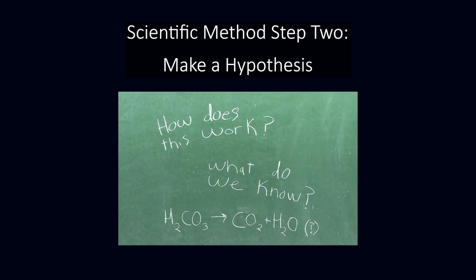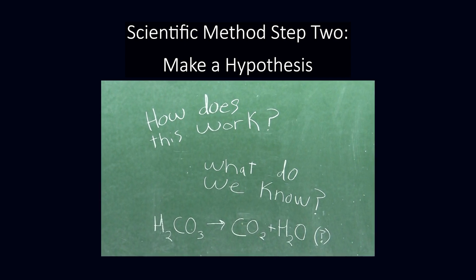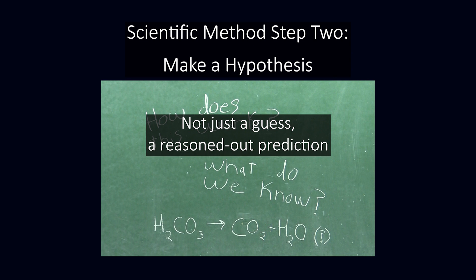Step two is to make a hypothesis, or a postulate if you will, that explains how your phenomenon works. A real hypothesis is not simply a guess. It's a prediction based on what's already known about your phenomenon. So, in order to make one, you have to learn as much as you can about whatever it is you're studying.